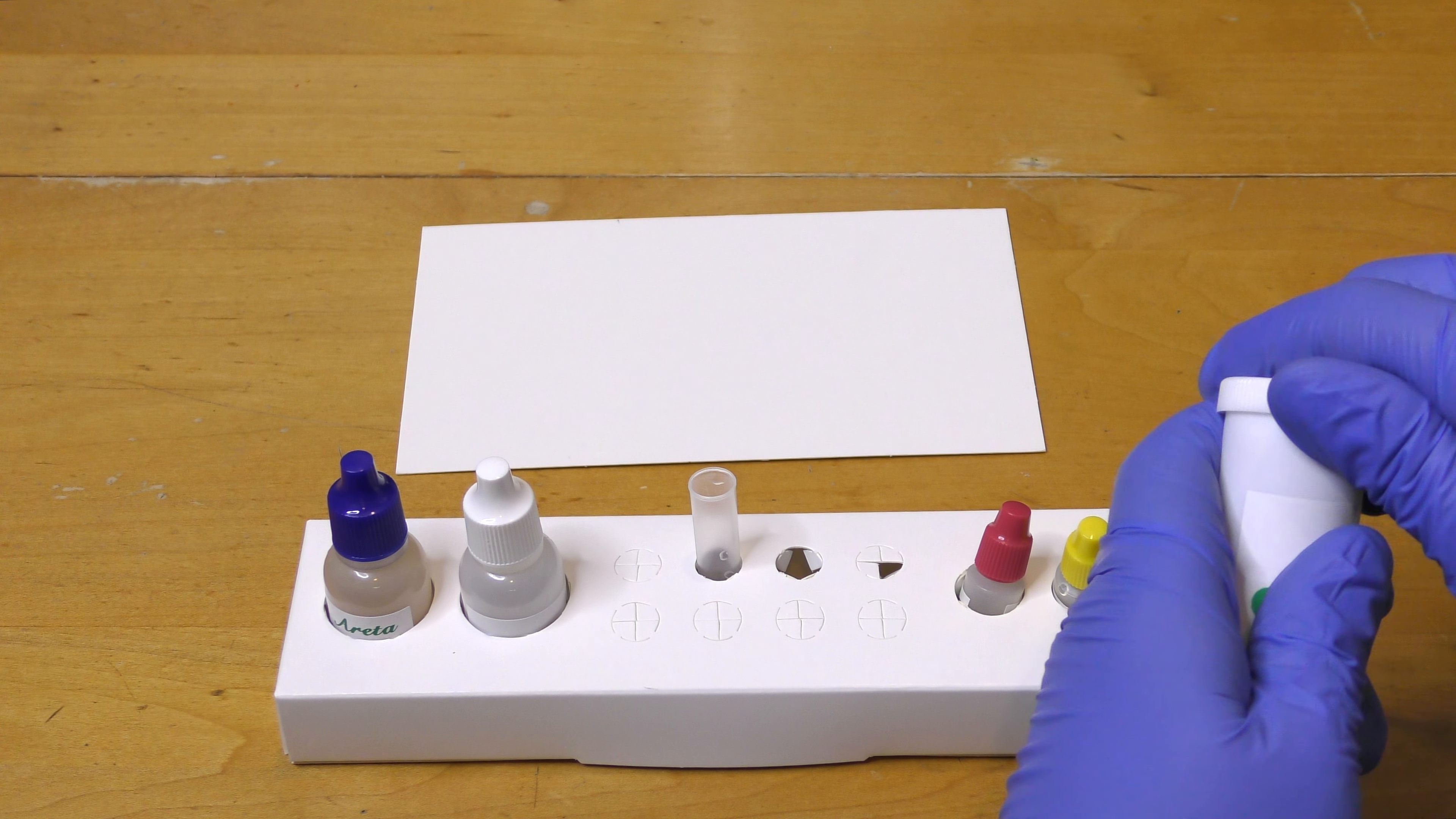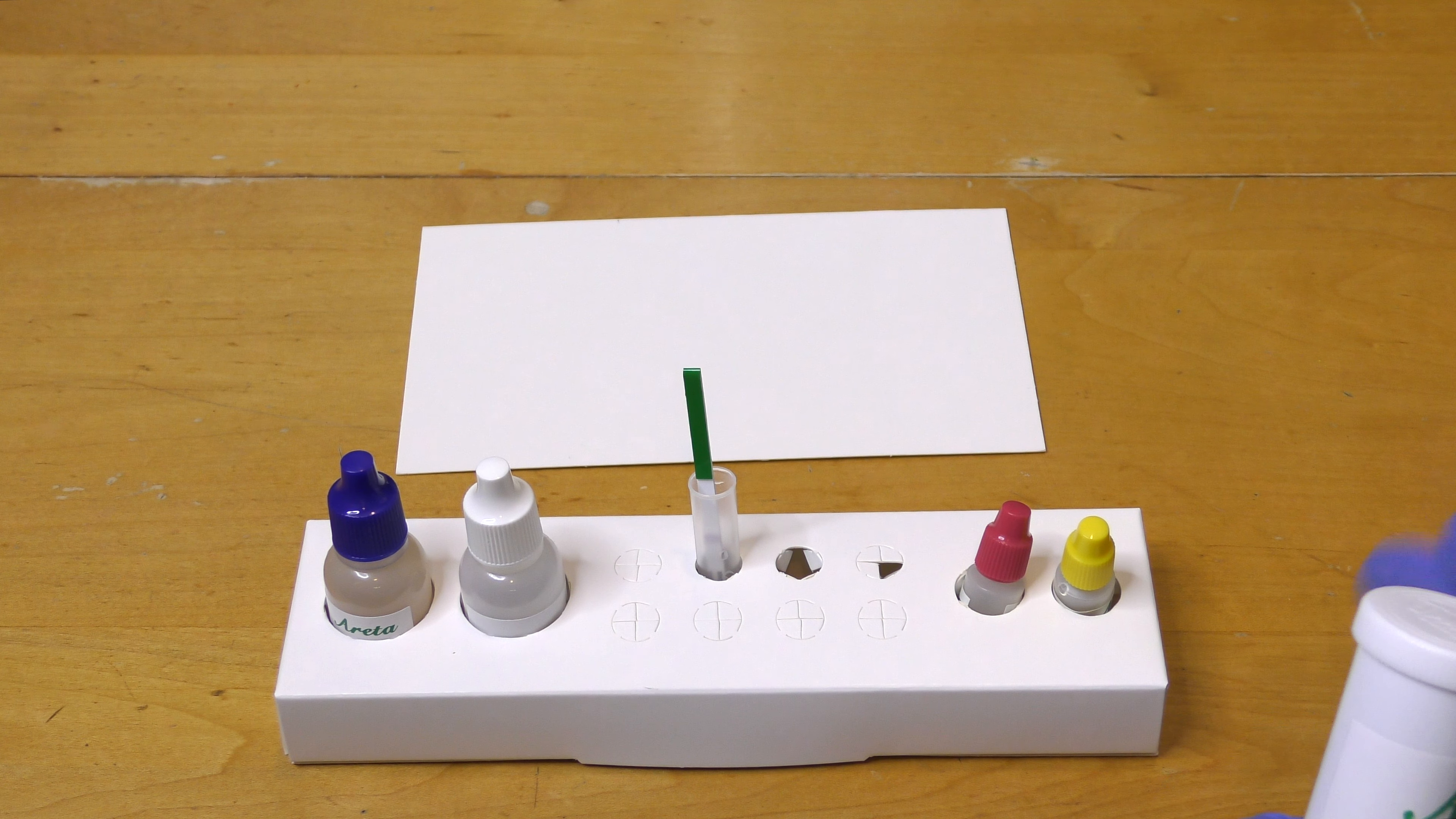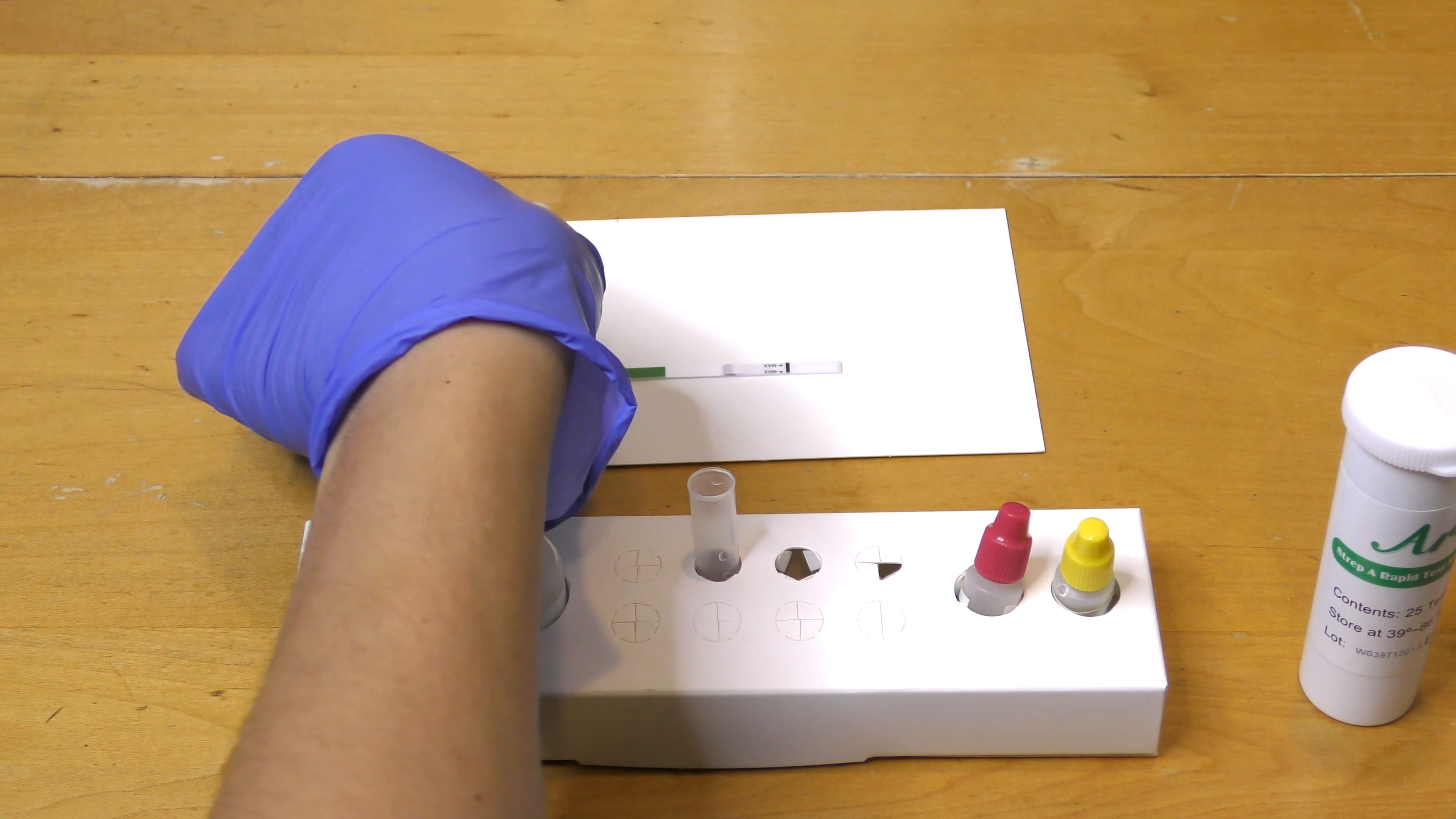A strep test strip is then removed and immediately placed into the extraction tube for 5 seconds. The strip is then removed and laid flat for 10 minutes.